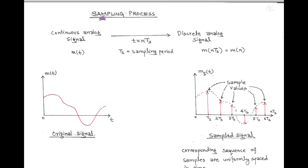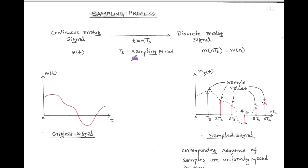Next, we are going to discuss the first topic of pulse modulation, which is called the sampling process. In analog pulse modulation, there is a sampling process. According to this, a continuous analog signal such as m(t) gets converted into a discrete analog signal, taken at sampling instants t = nTs, where Ts is called the sampling period. The discrete analog signal is denoted by m(nTs). Generally, we take unit sampling period, that is Ts = 1, so the discrete signal is represented as m(n). Here, t is called continuous time and n is called discrete time.